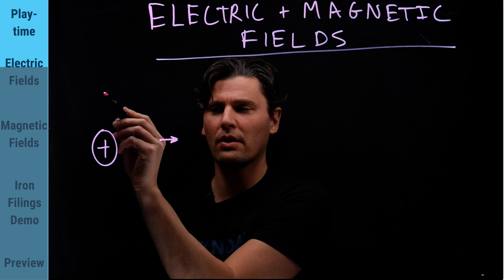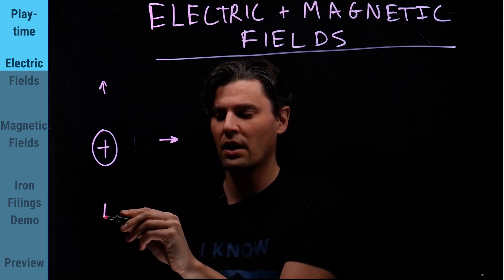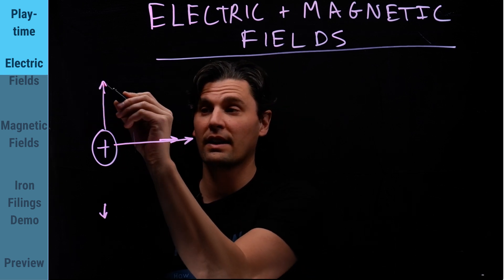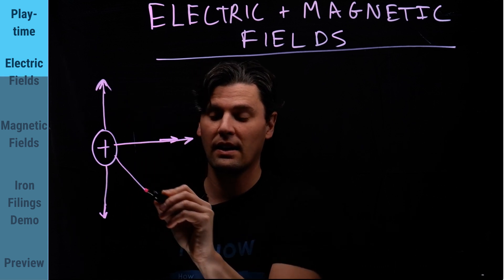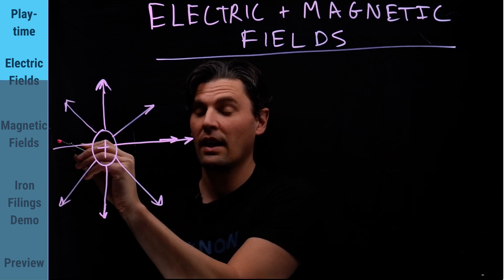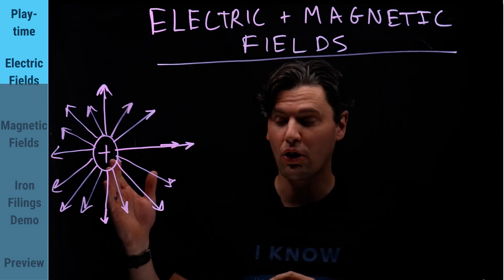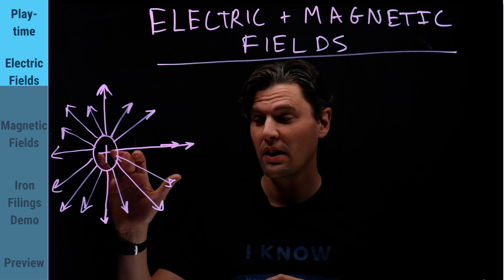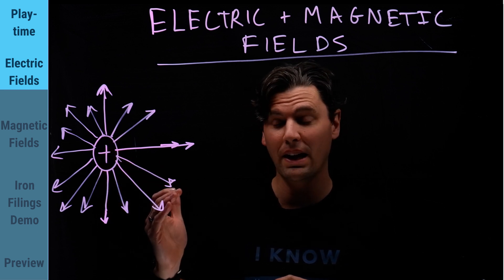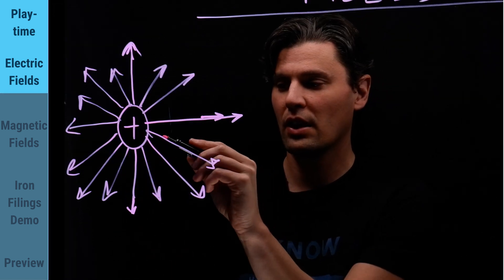The same thing here, if I put a little test charge here, that little test charge would go out in this direction. We can draw field lines like this that indicate the electric field. If you're closer in to the point charge, the electric field is going to be stronger. If you're further away from that point charge, the electric field is going to be weaker, and you can visualize that by looking at the density of these lines.